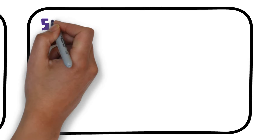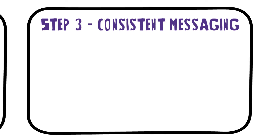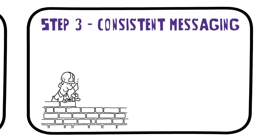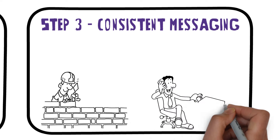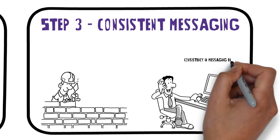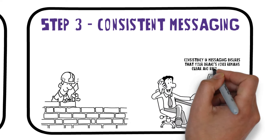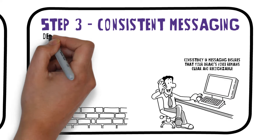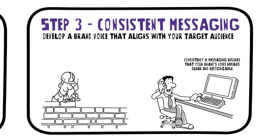Step 3: consistent messaging. Consistency is key to establishing a strong brand identity. From your website copy to your social media posts, consistency in messaging ensures that your brand's voice remains clear and recognizable. Develop a brand voice that aligns with your target audience.